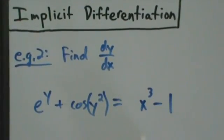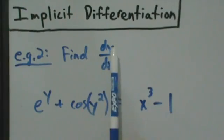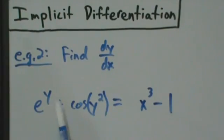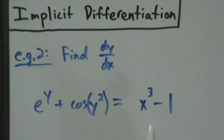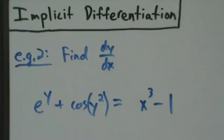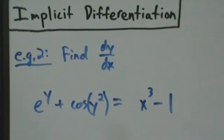Here's example two with implicit differentiation. We want to find dy/dx. We have e to the y plus cosine of y squared equals x cubed minus 1. Step one is to implicitly differentiate both sides — differentiate both sides with respect to x.